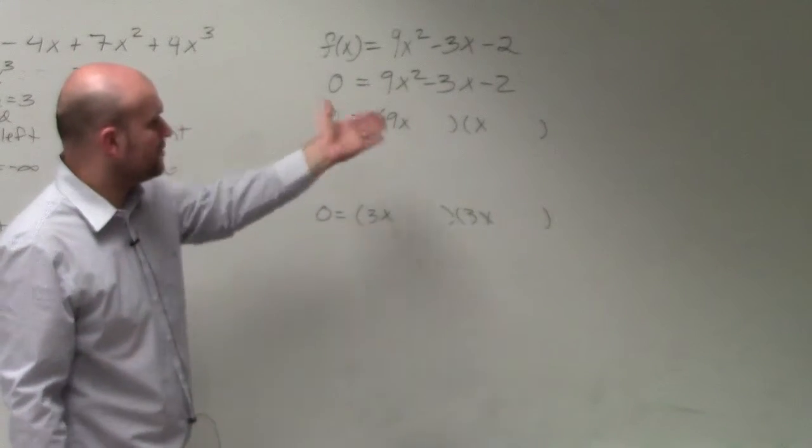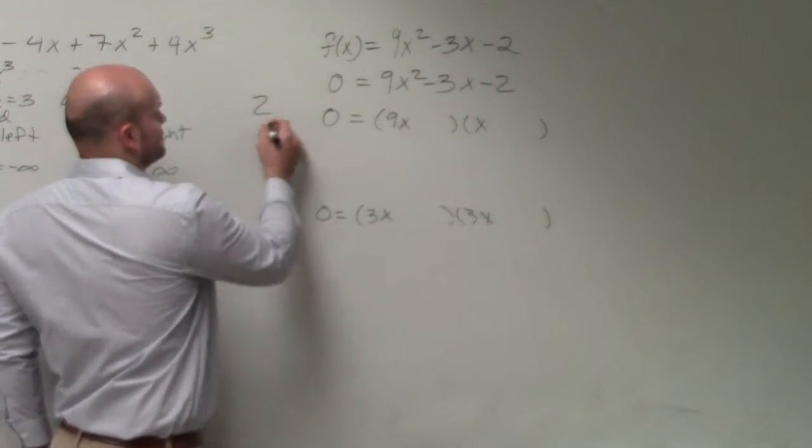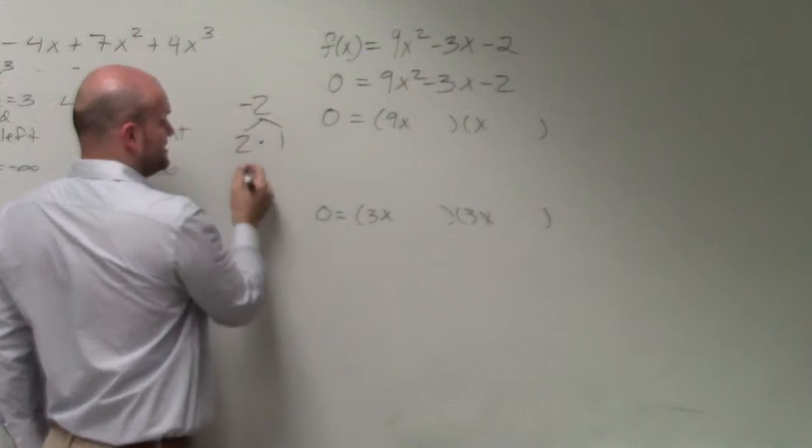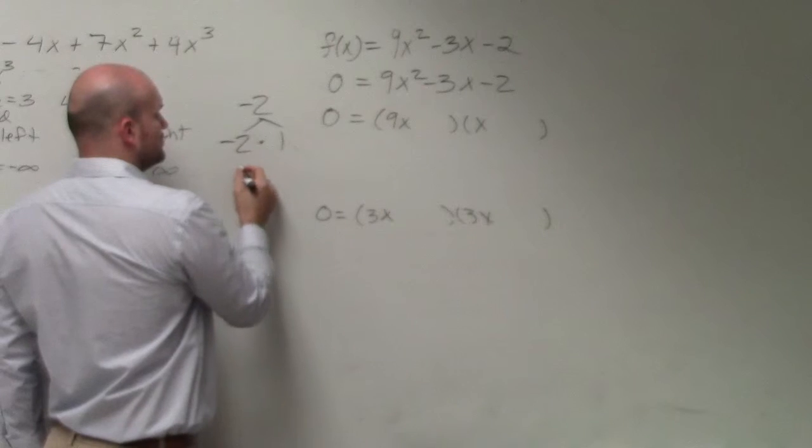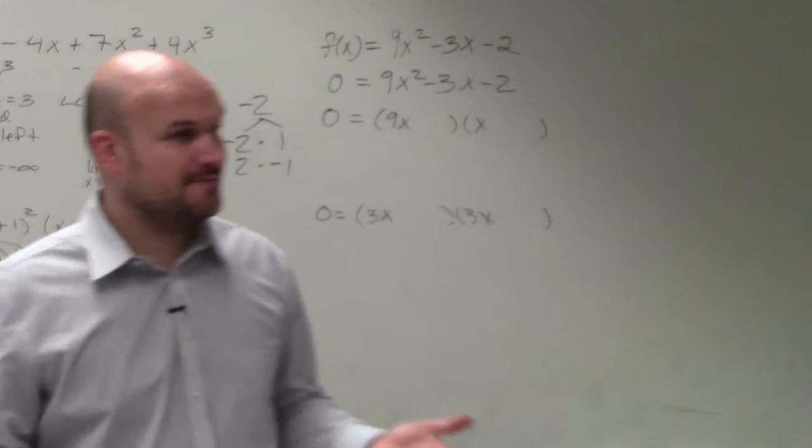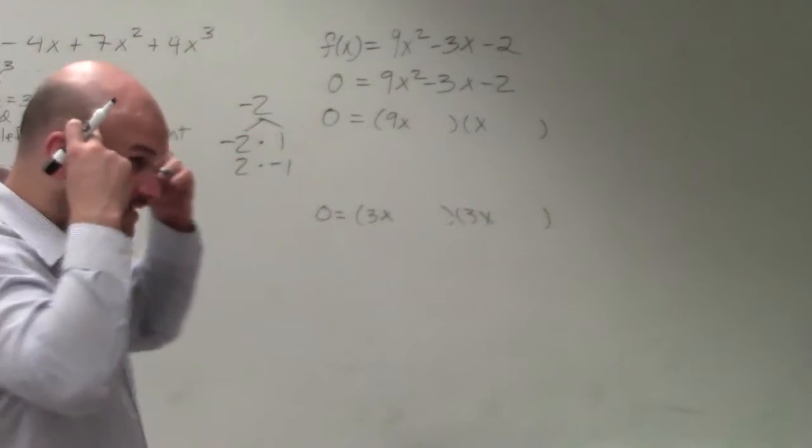Then what we need to do is figure out, well, for 2. 2 is either 2 and 1. So it's negative. So it's either negative 2 and 1, or 2 and negative 1. So you only have so many options, right? Now, again, yes?